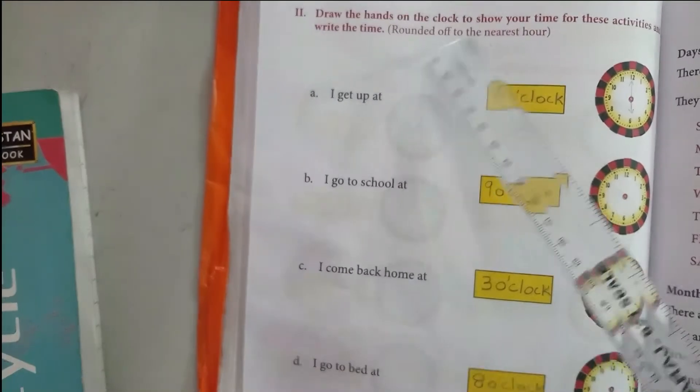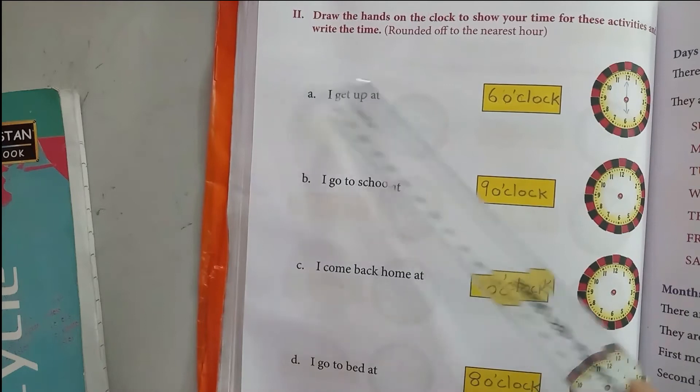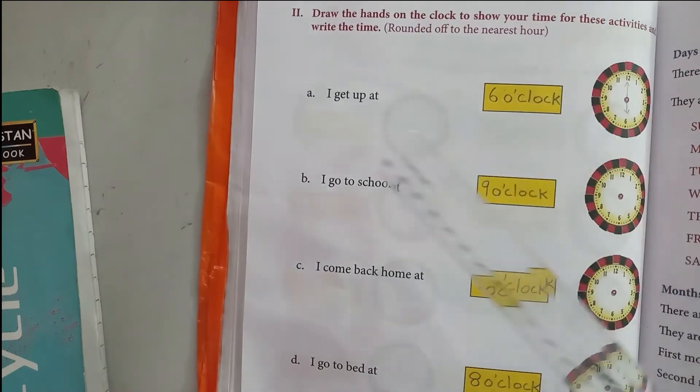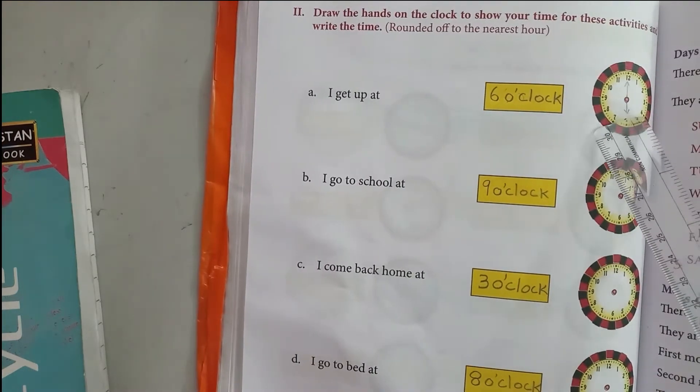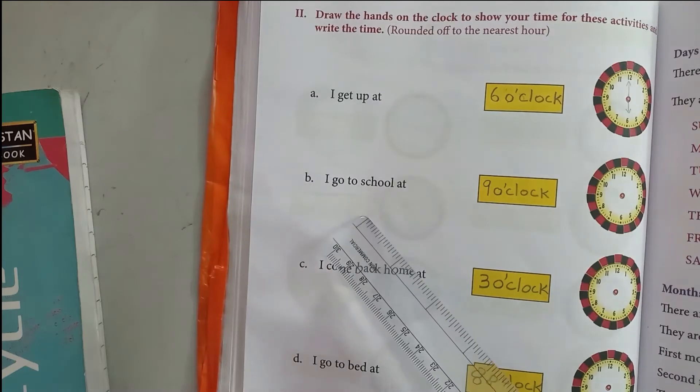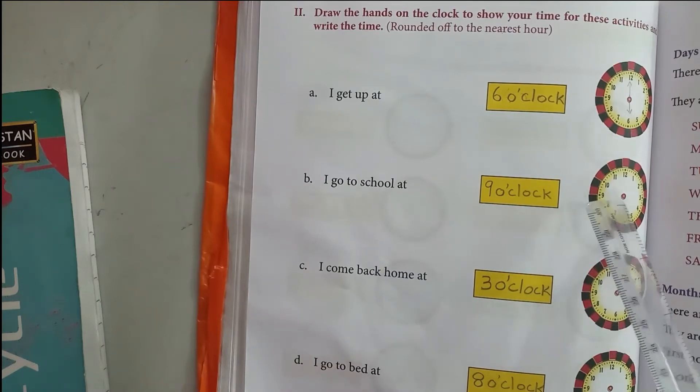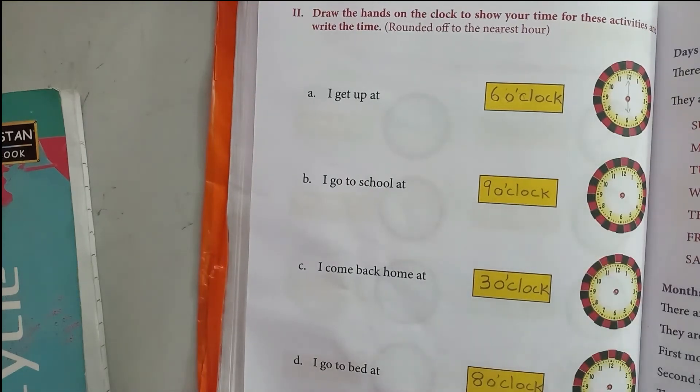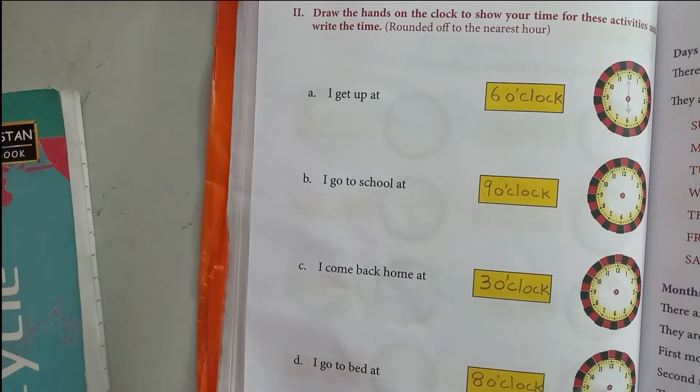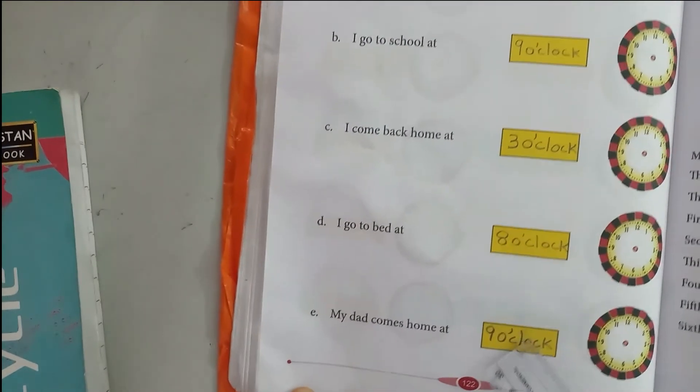Now draw the hands on the clock to show your time for these activities and write the time. I get up at 6 o'clock. You go to school at 9 o'clock, so draw the short hand pointing to 9 and the long hand pointing to 12. I've done one for you. You draw the timings for the rest: I come back home at 3 o'clock, I go to bed at 8 o'clock, my dad comes home at 9 o'clock.